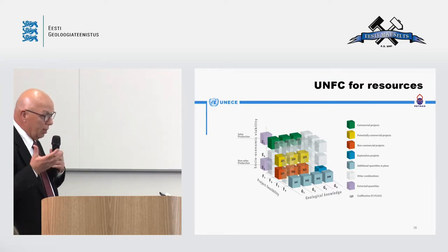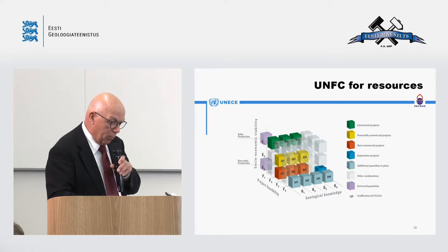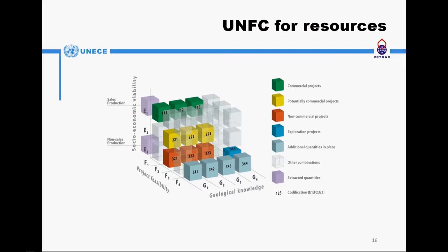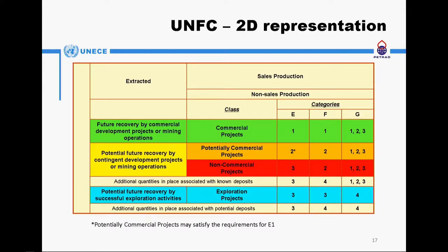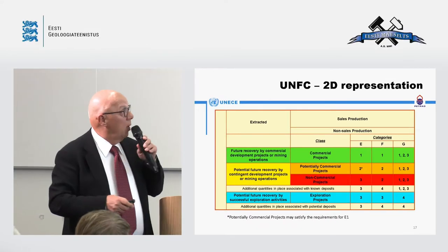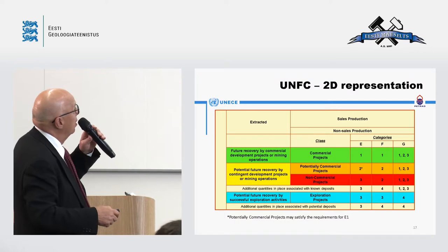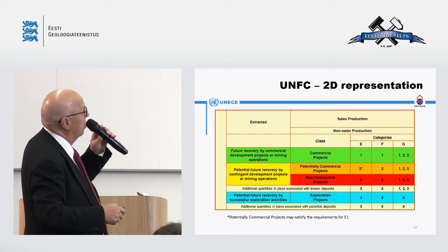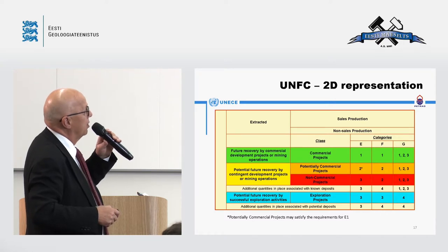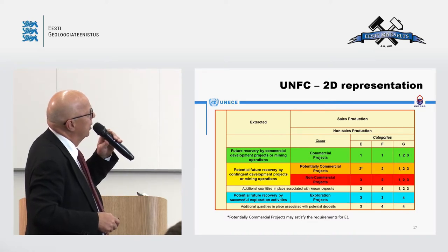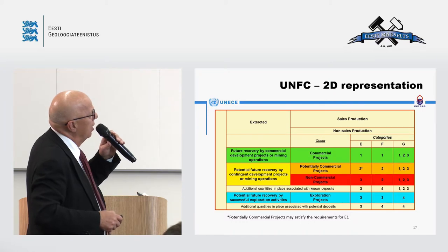This is how it looks in a 3D version — many people have difficulties with that for good reasons. Since this work is done by consensus, there was also a consensus that a 2D presentation can be used. In the 2D view, you can see the classes: commercial projects, potentially commercial projects, non-commercial projects, and exploration projects, with the E, F, and G categories displayed.